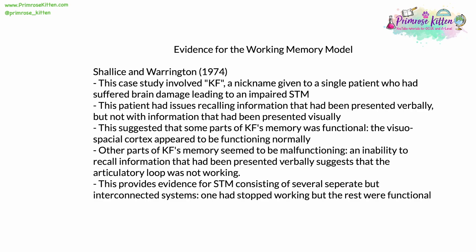Shallice and Warrington, working in 1974, found further medical evidence for the working memory model. Their case study involved a patient nicknamed KF, who had suffered brain damage leading to an impaired short-term memory. KF had issues recalling information presented verbally, but not information presented visually through graphs or charts. This suggested some parts of KF's short-term memory were functional — the visuospatial sketchpad appeared to be working perfectly — but that the articulatory loop was not working properly, providing evidence for STM consisting of several separate but interconnected systems.